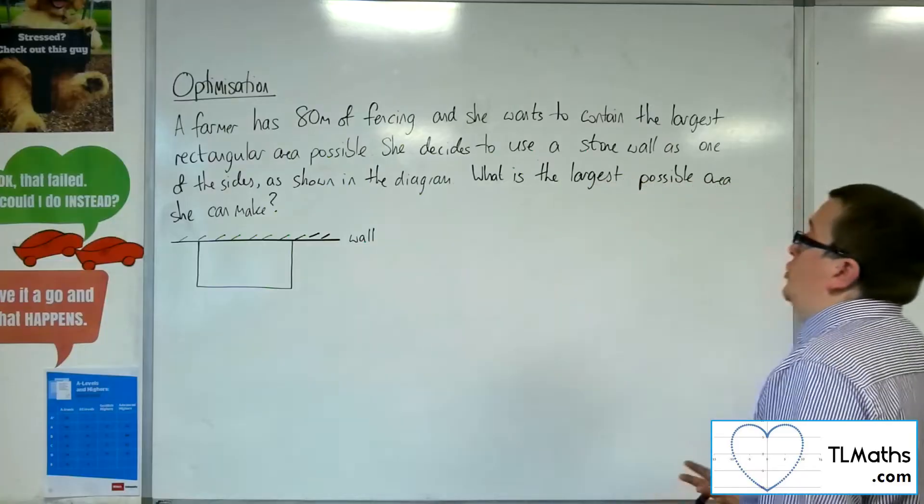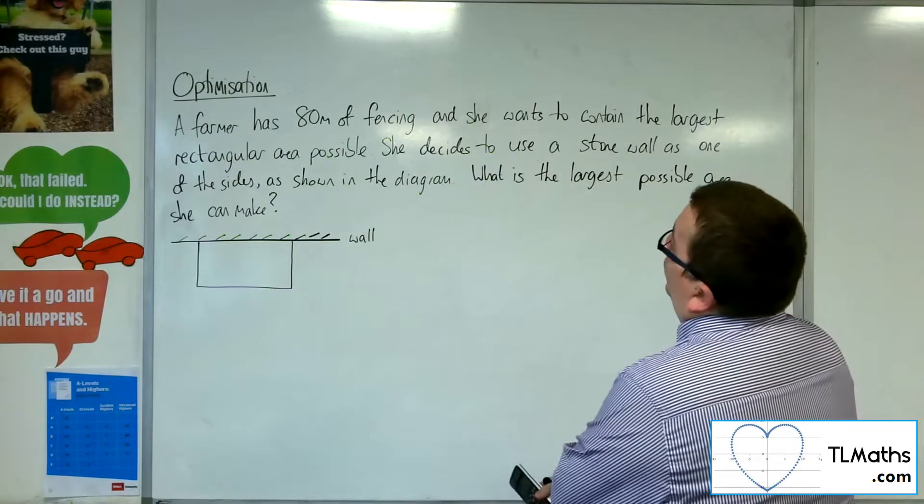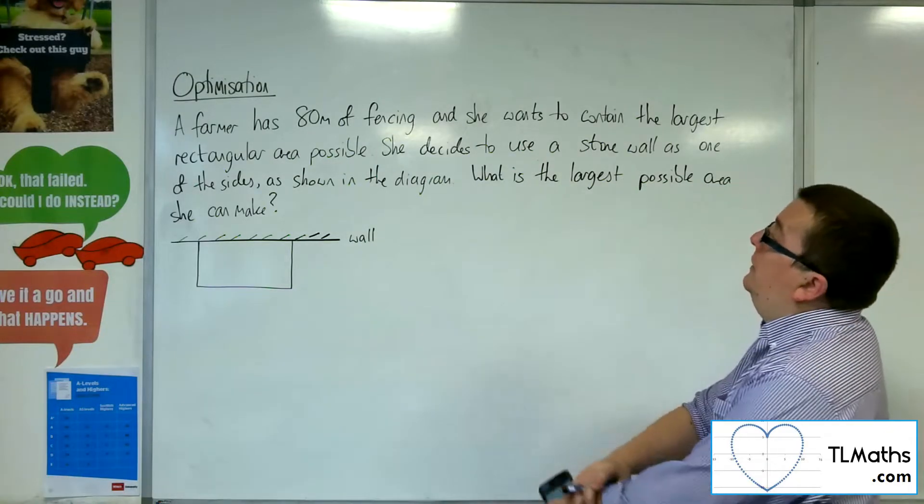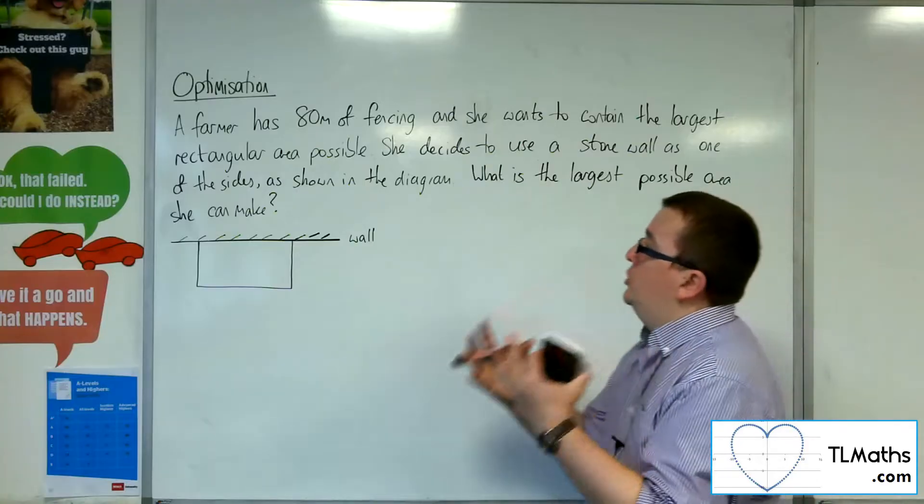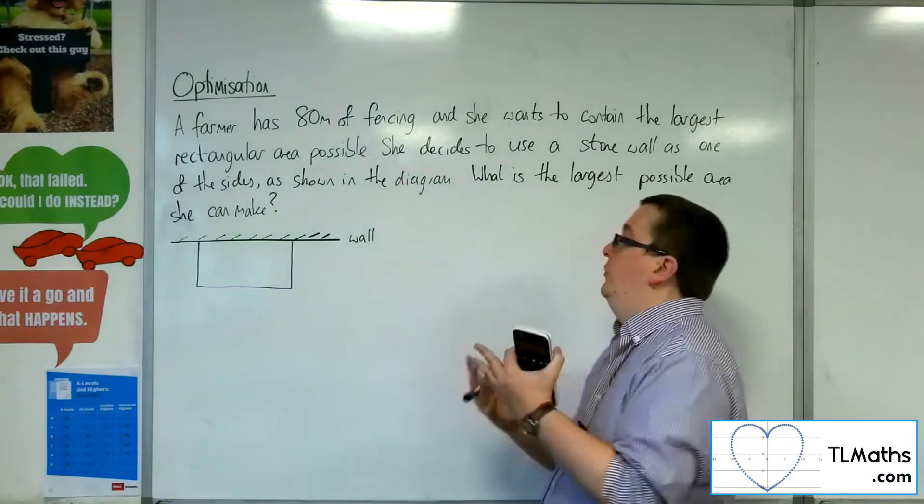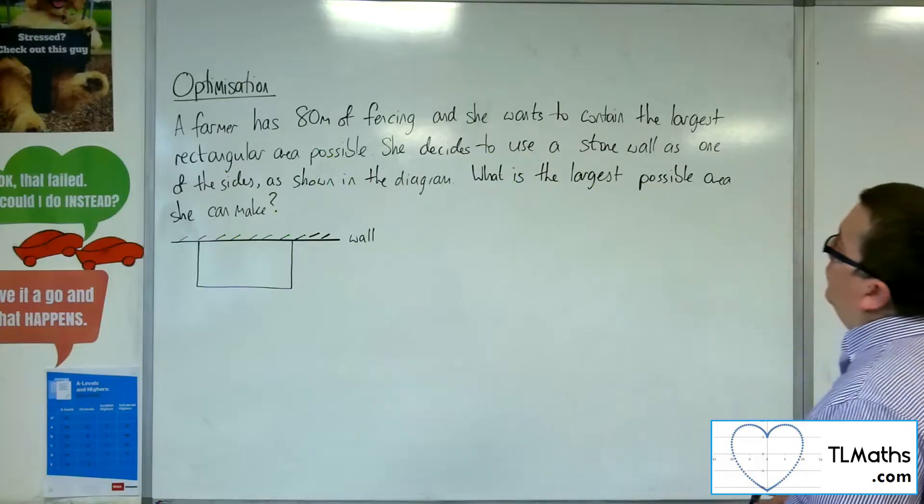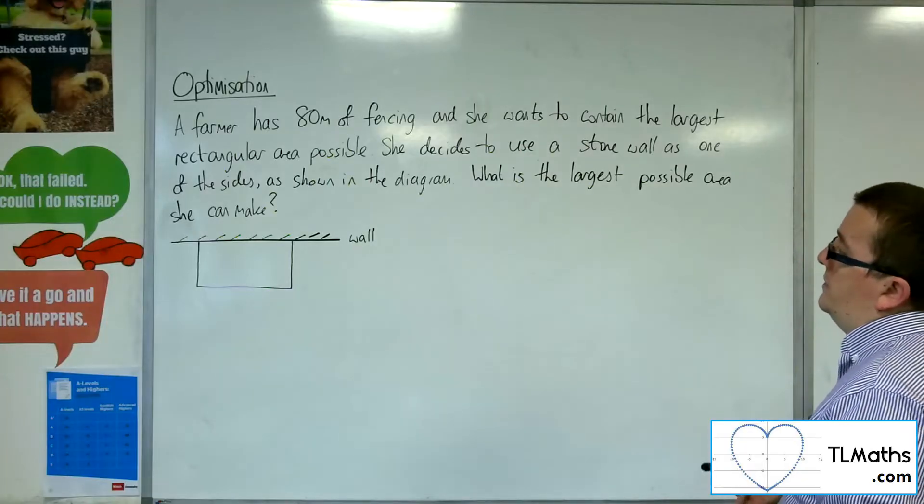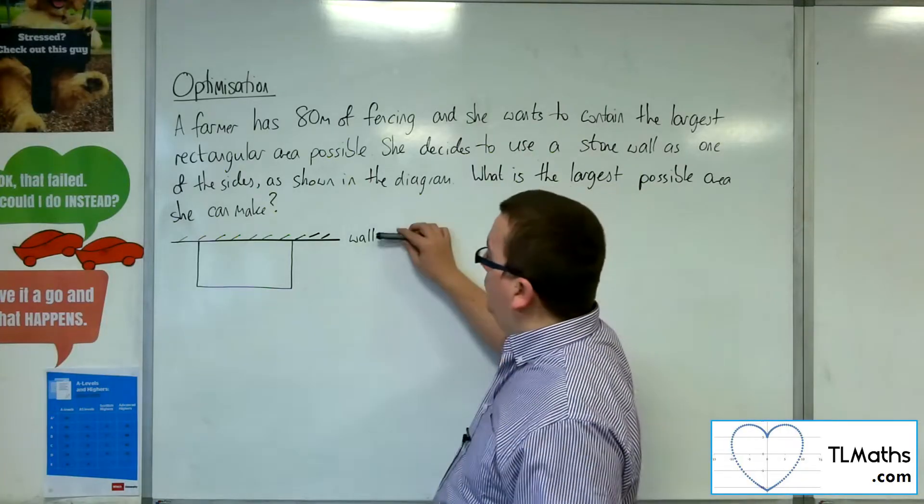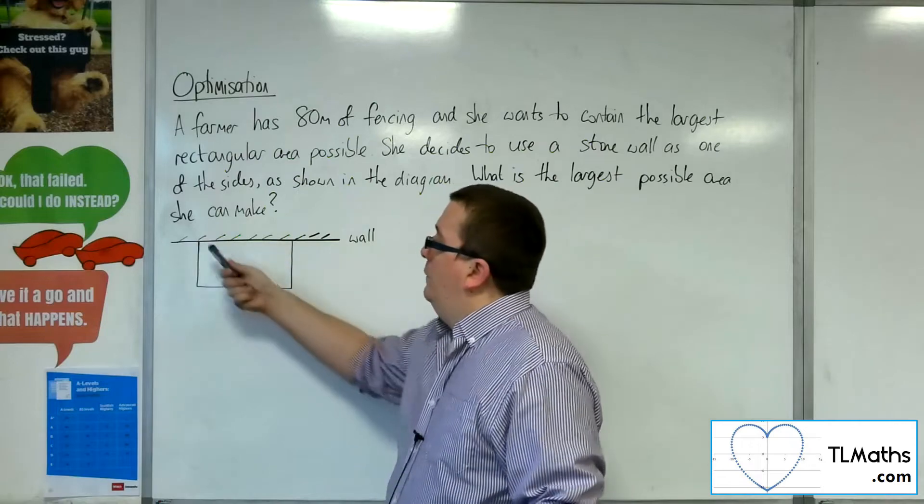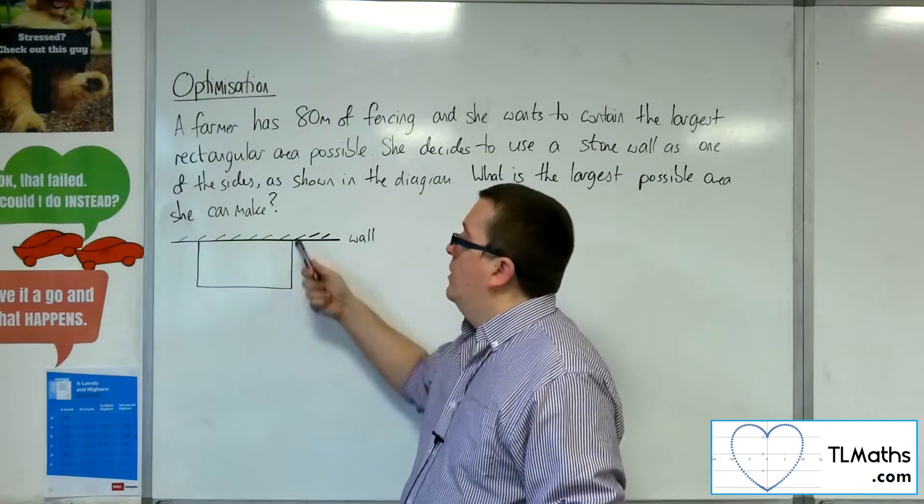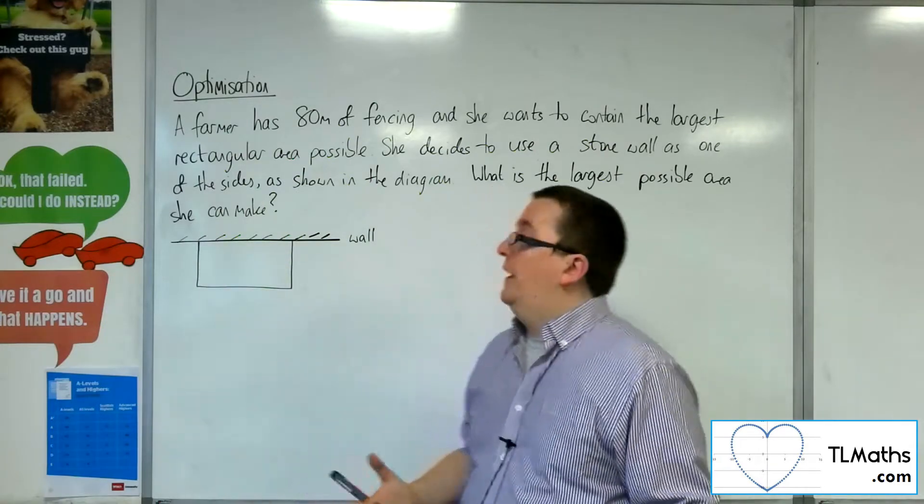In this situation, we've got a farmer who has 80 meters of fencing and she wants to contain the largest rectangular area possible. She decides to use a stone wall as one of the sides as shown in the diagram.